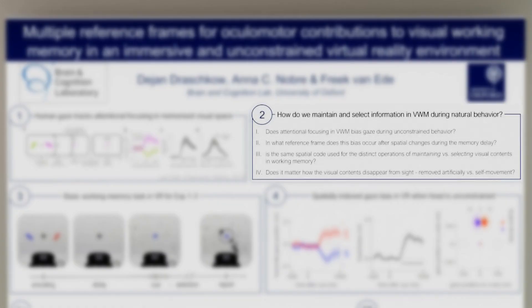In what reference frame does this gaze bias occur after spatial changes during the memory delay? Can we find distinct spatial codes for the distinct operations of maintaining versus selecting visual contents in working memory? And do these operations in working memory depend on the way visual contents disappear from sight? That is artificial offset versus a more natural disappearance due to self-movement.